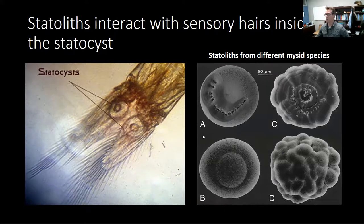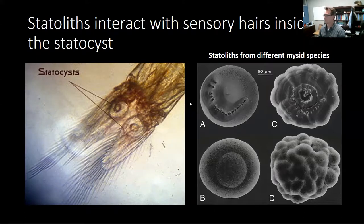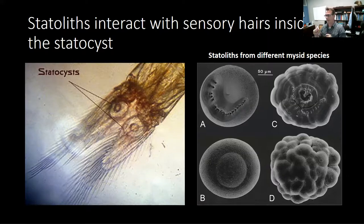The way statocysts work is really cool. Inside each statocyst, there are small sensory hairs all around the outside of the organ. As the mysid is moving through the water or maintaining position, the statolith presses against these different sensory hairs. Depending on where and how hard the statolith presses against those hairs, that helps the mysid track where it is in the water column and how fast it's moving. These statoliths can also be used in some mysids as a proxy for body size — as the mysid gets bigger, the statoliths get larger, and researchers have related the diameter of the statoliths to the length of the mysid, which can be useful for paleoecological studies.